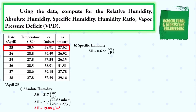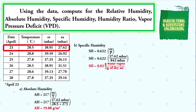Next, we solve for the specific humidity. Using the formula SH = 0.622 × ea / P, we substitute: SH = 0.622 × 27.62 millibars / 843 millibars. We simply solve and we have a value for our specific humidity of 0.02 grams of water vapor per kilogram of dry air.